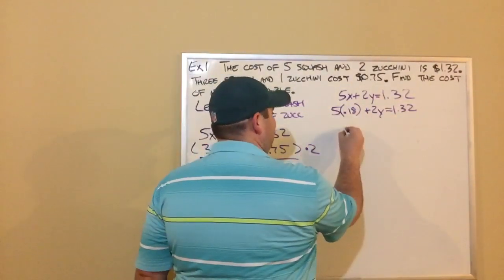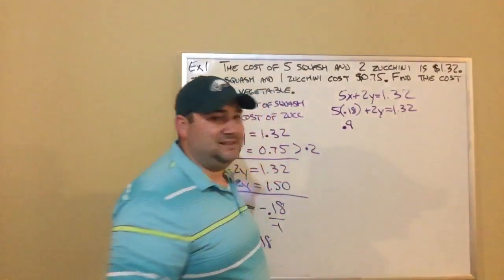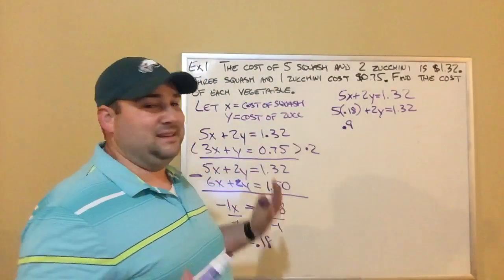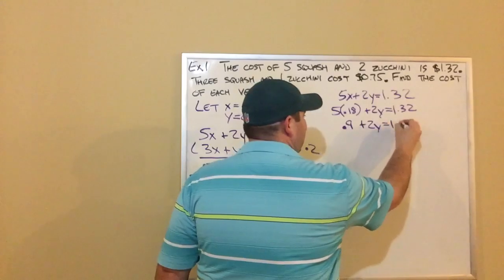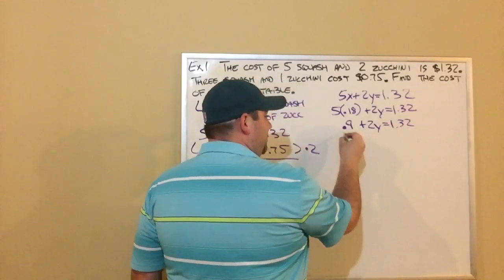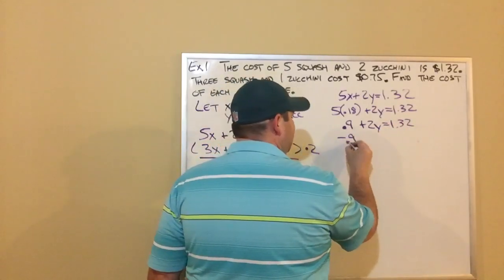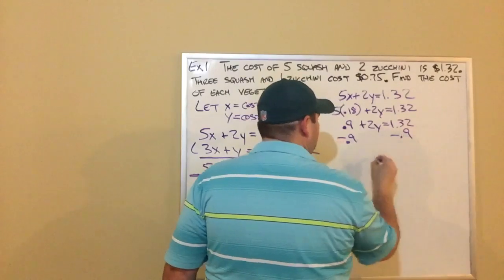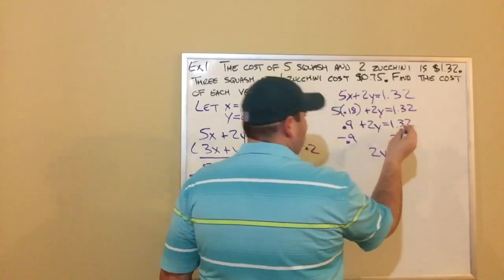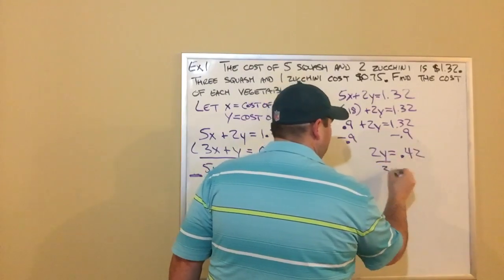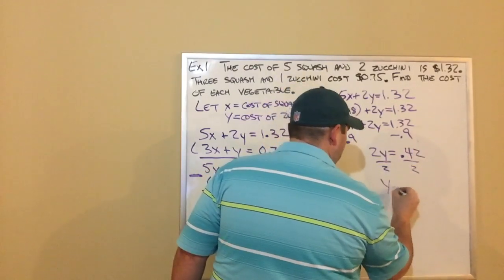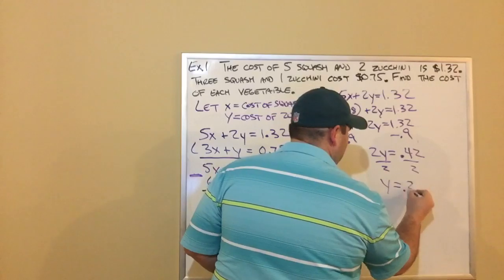So now all I've got to do is solve this equation for Y. First thing I do is 5 times 0.18. That's 0.90 because I know it's money. And then that's plus 2Y equals $1.32. So now it's two-step equation. Subtract 0.9 from both sides. I do that. I got 2Y equals 42 cents. Divide by 2. And I got Y equals 0.21.